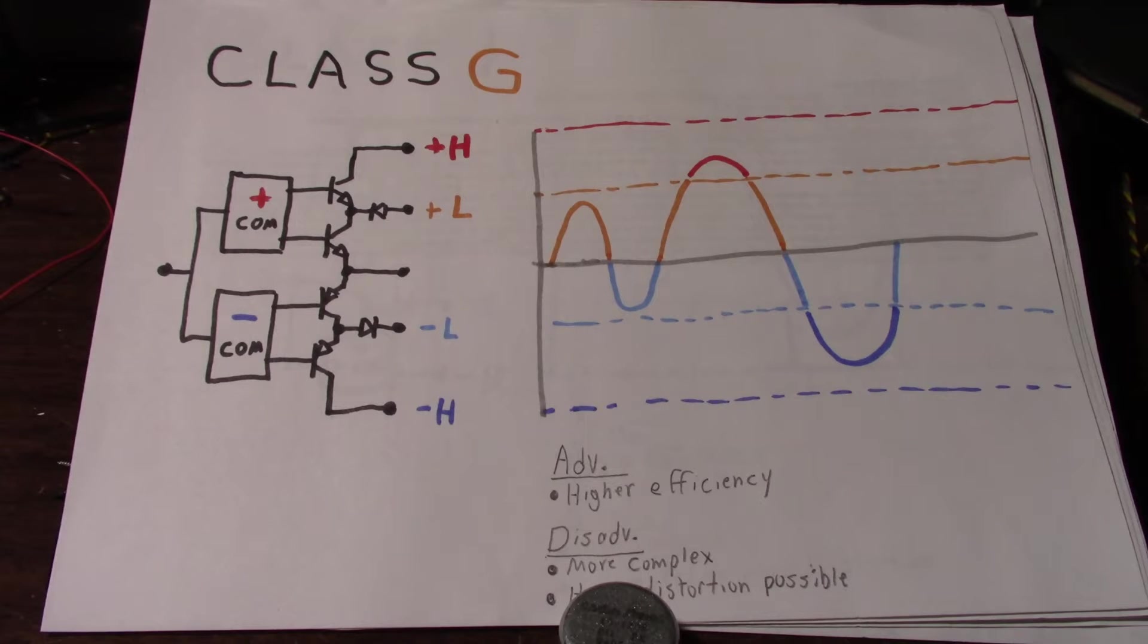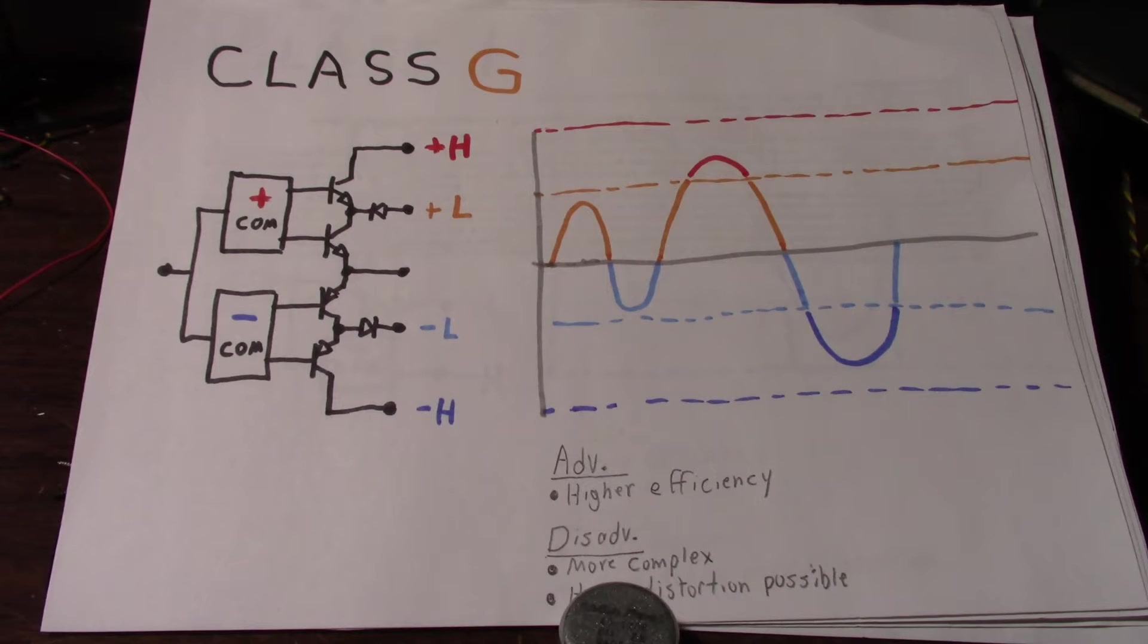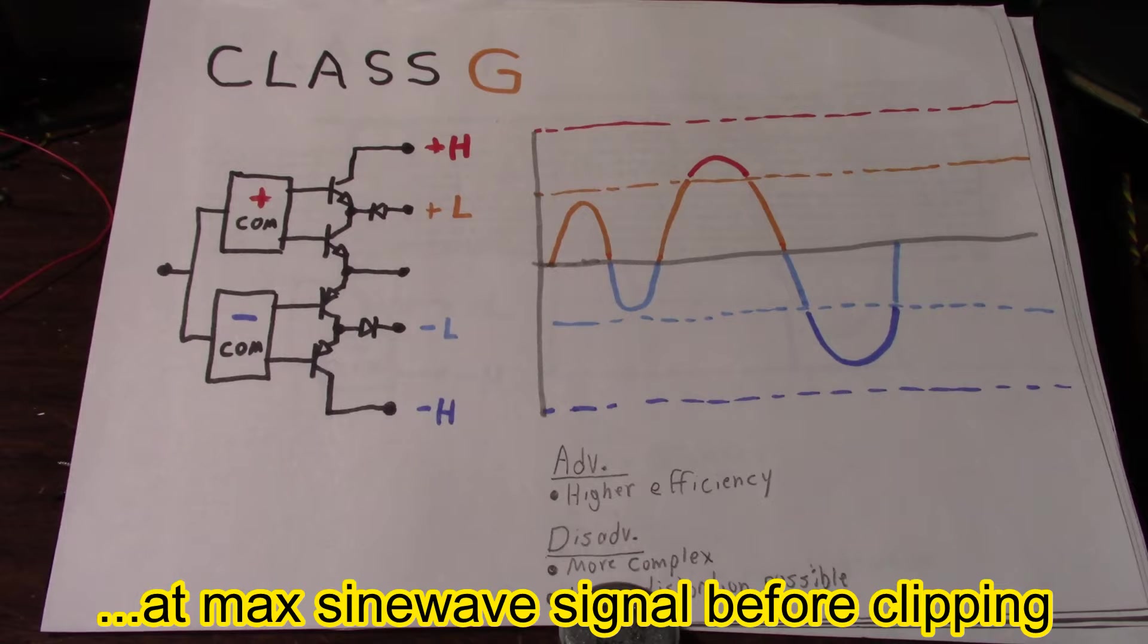These were more common before Class D came along, because Class D is overall more efficient than even Class G and H. But the problem with Class AB amplifiers with higher powers is they just dissipate so much heat. If you need an amplifier over 100 watts, say you need a 500-watt amplifier for PA use or whatever, the amplifier itself has to dissipate an additional amount of heat on top of that, another 35% or so additional heat.